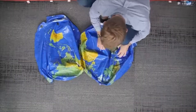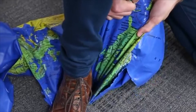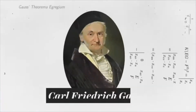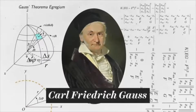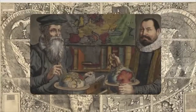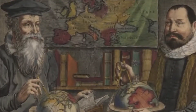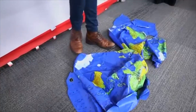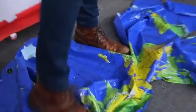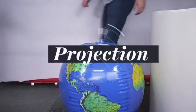The surface of a sphere cannot be represented as a plane without some form of distortion. That was mathematically proved by this guy a long time ago. Since around the 1500s, mathematicians have set about creating algorithms that would translate the globe into something flat, and to do this they use a process called projection.